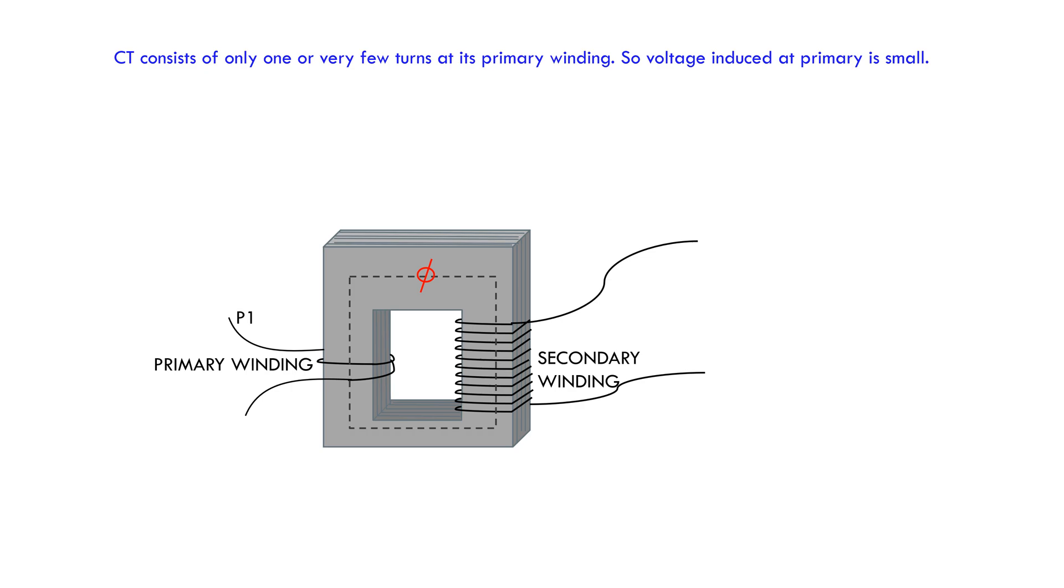Flux created due to small induced voltage at primary is phi which links with secondary winding and creates a flow of secondary current when the secondary is short-circuited.